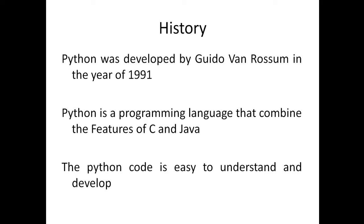Python was developed by Guido van Rossum in the year 1991 at the Center of Mathematics and Computer Science, managed by the Dutch government. Van Rossum picked the name Python for this language from the very famous TV show Monty Python's Flying Circus.